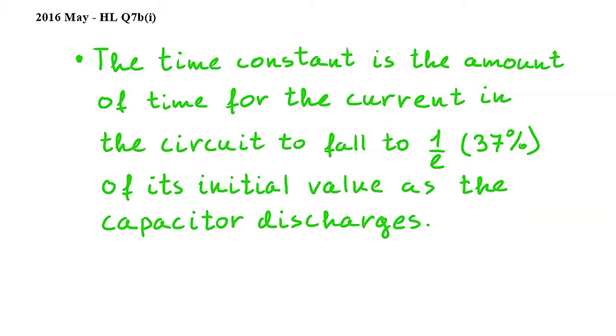Instead of current, you can use charge or voltage, and you can also explain the time constant in the context of the capacitor charging instead of discharging. In this case, your values would be 1 minus 1 over E, or 63%.